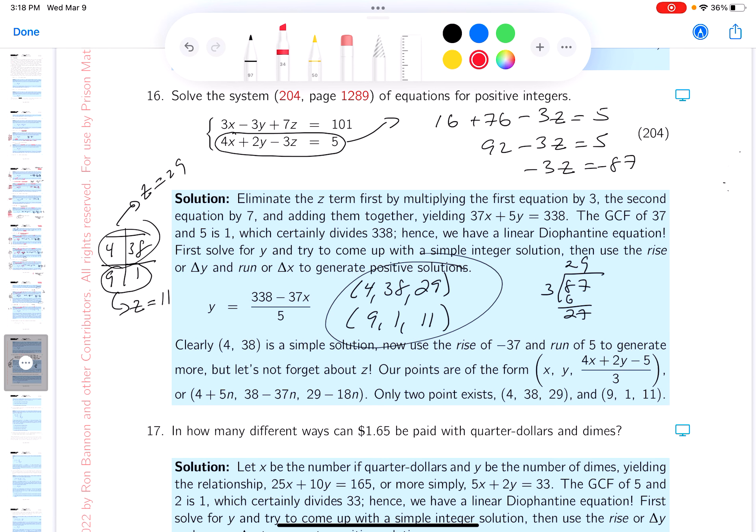Let's look at our answer key. And I'm seeing 4, 38, 29. And I'm seeing 9, 1, 11. Things are going as advertised. Thank you.